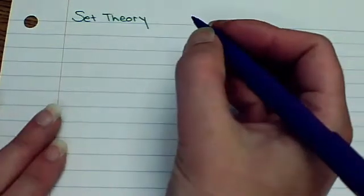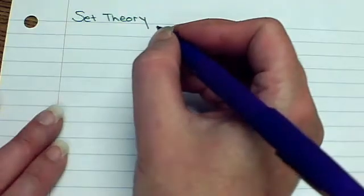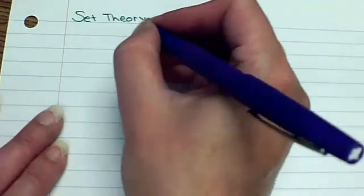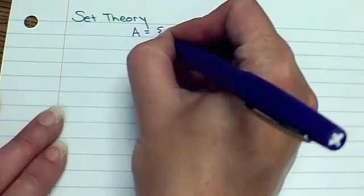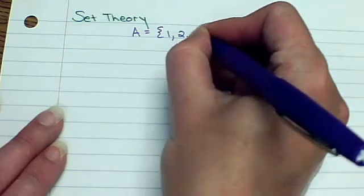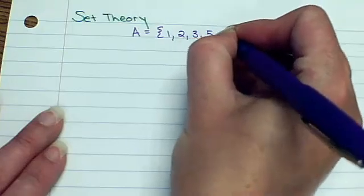Okay, we're going to be talking about the basics of set theory today. Sets either can be described or listed out explicitly. For example, let me just take a set. Let's say it's set A. And let's say that A is the numbers 1, 2, 3, 5, and 9.